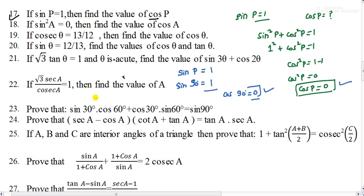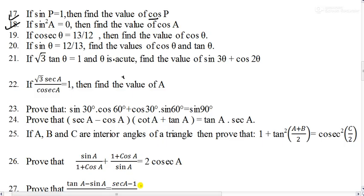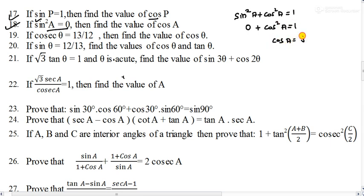If you have understood, give a thumbs up. Raise your hand if you have any doubt. Question number 18 says: if sin²A = 0, then find the value of cos A. Again using the same identity: sin²A + cos²A = 1. Here sin²A is 0, so substituting gives cos²A = 1. Therefore cos A = √1 = 1. So the answer is 1.